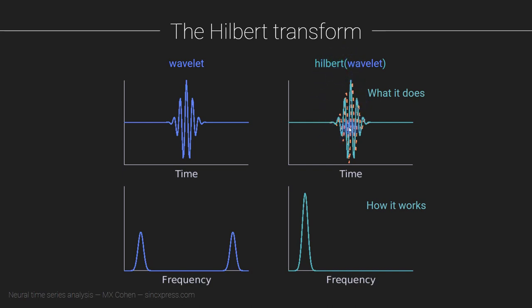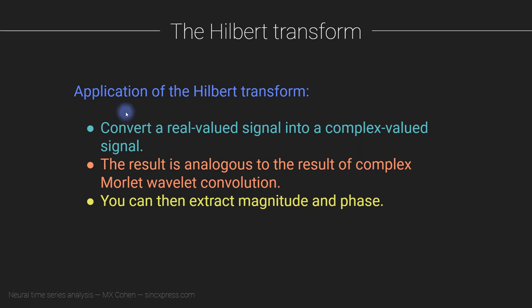Now the goal of the Hilbert transform is not necessarily to give us a complex-valued wavelet per se. Instead, it is to give us a complex-valued signal — also called an analytic signal — that we can use to extract power or amplitude and phase information in addition to the real part of the signal. Application of the Hilbert transform converts a real-valued signal into a complex-valued analytic signal. This result is analogous to the result of complex Morley wavelet convolution. So what you can do with a Hilbertized signal is extract the magnitude and phase, just like you would with the result of complex wavelet convolution.